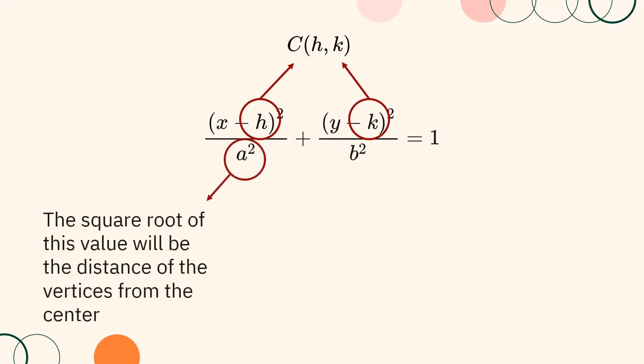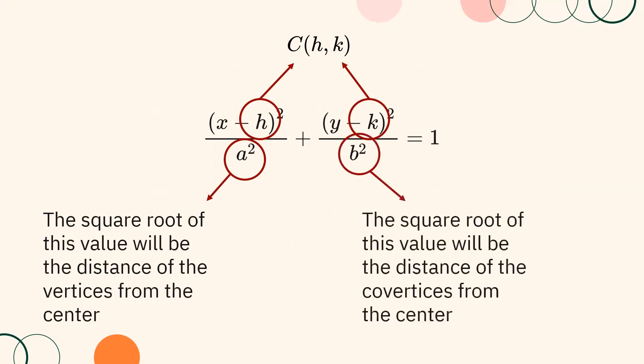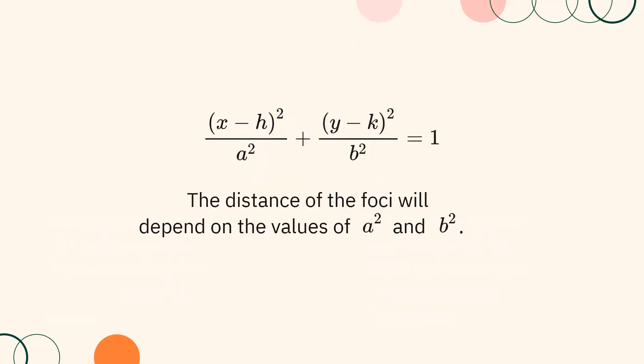The square root of A squared is the distance of the vertices from the center. The square root of B squared is the distance of the co-vertices from the center. The distance of the foci from the center is C units, where C can be solved by the formula C equals the square root of A squared minus B squared.